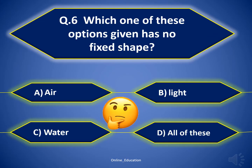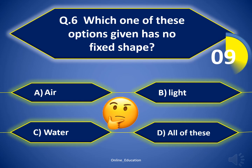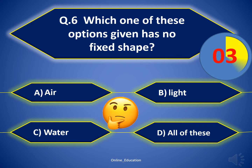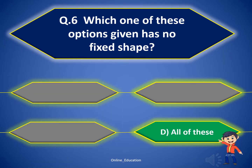Question 6. Which one of these options given has no fixed shape? The correct answer is Option D — All of these. Wow, you did it!